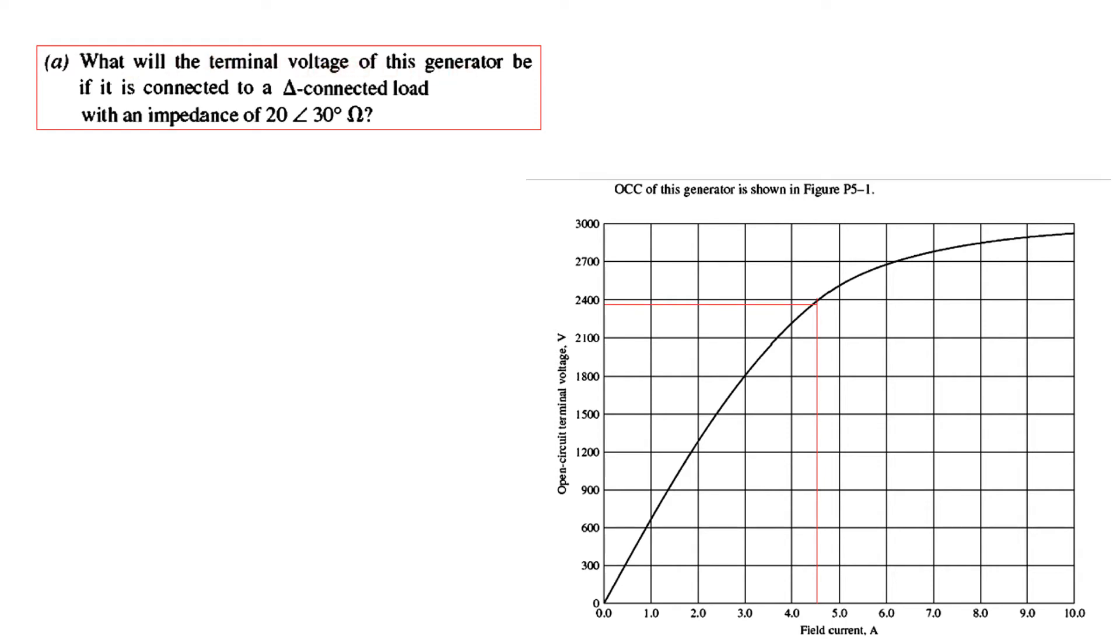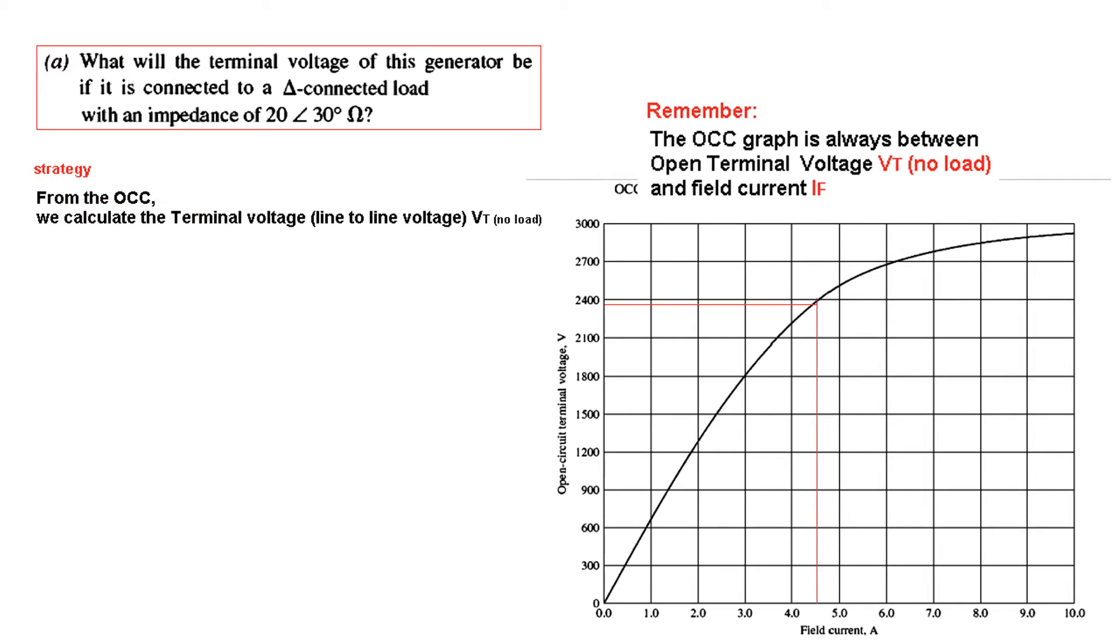Part (a): If it is connected to a delta connected load with impedance of 20 angle 30 degrees. Before we solve, the open circuit characteristic graph from example 5.2 is given. This graph is between the terminal voltage and field current.